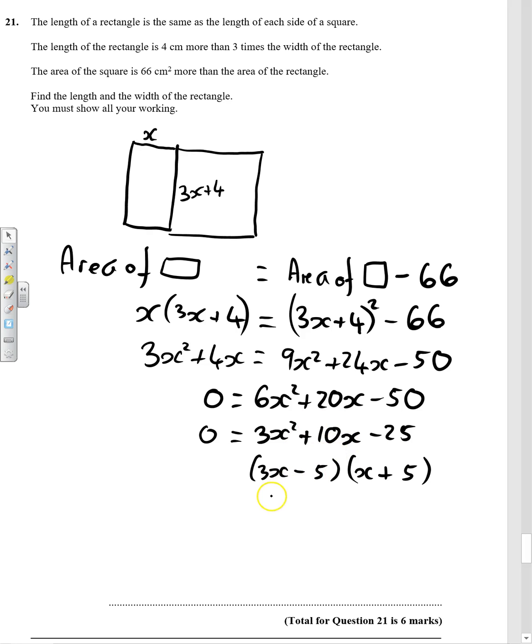Put each one equal to 0. So we've got 3x equals 5. So x is 5 thirds, or x equals minus 5. Well, x can't be minus 5 because it's a length. So x is 5 thirds.